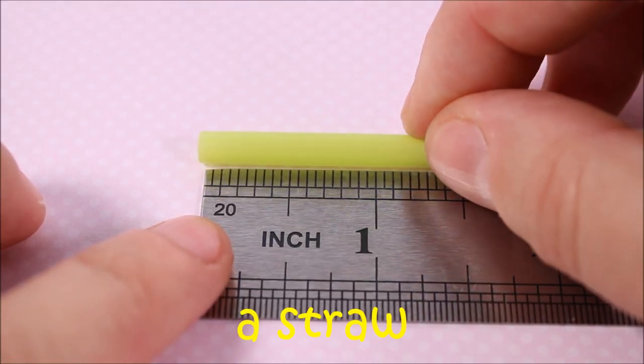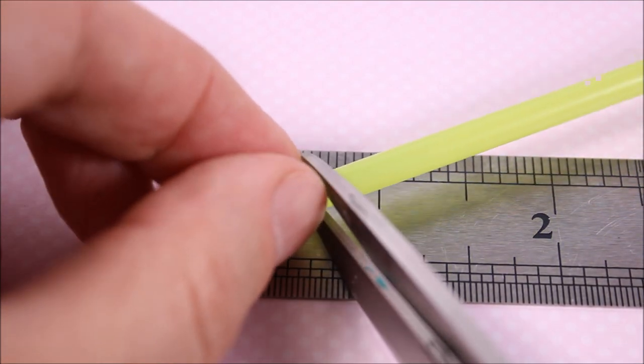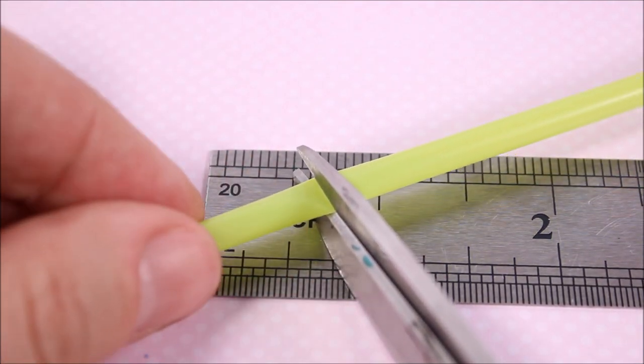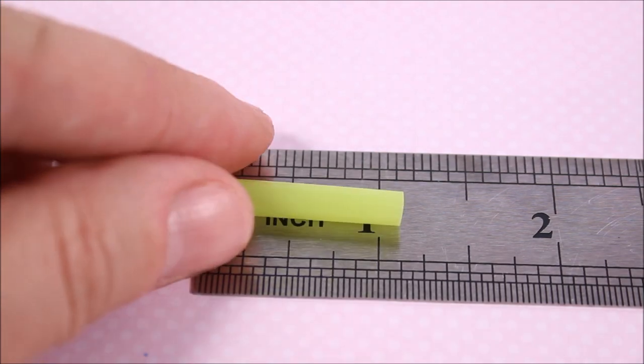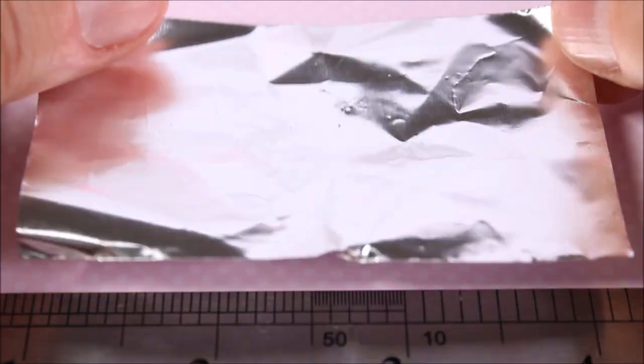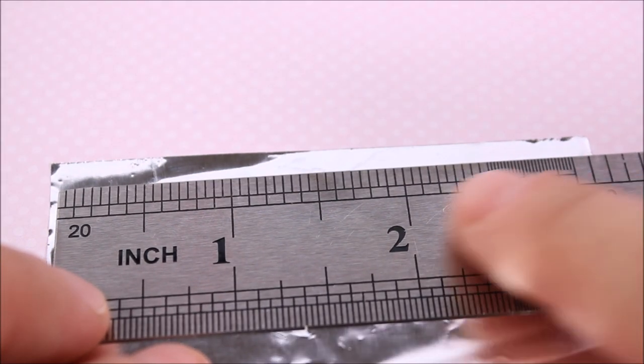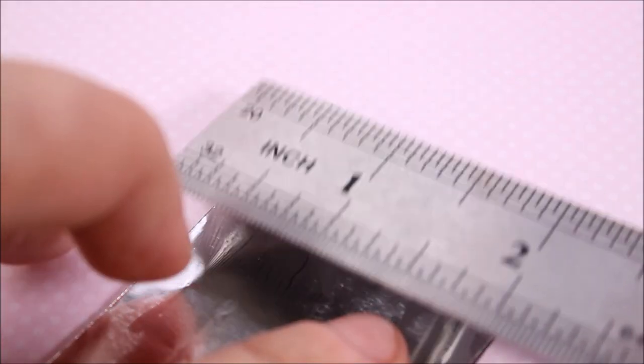I'm taking a straw and I cut 1 inch of it. Next I'm taking aluminum foil and I'm cutting a piece that is approximately 3 inches by 2 inches wide.